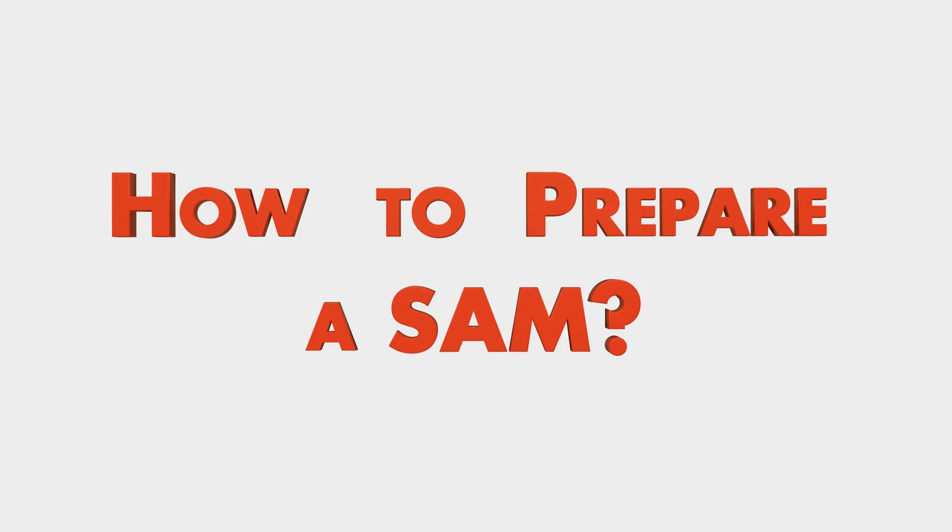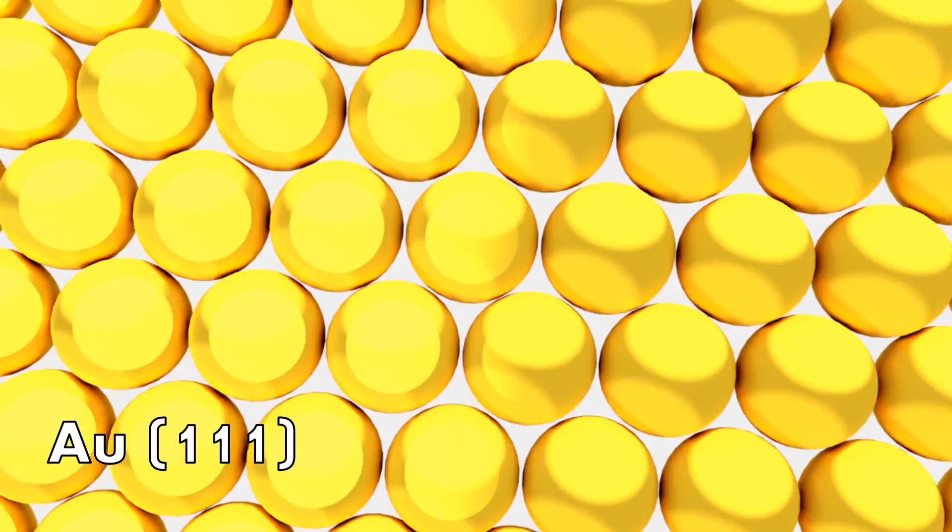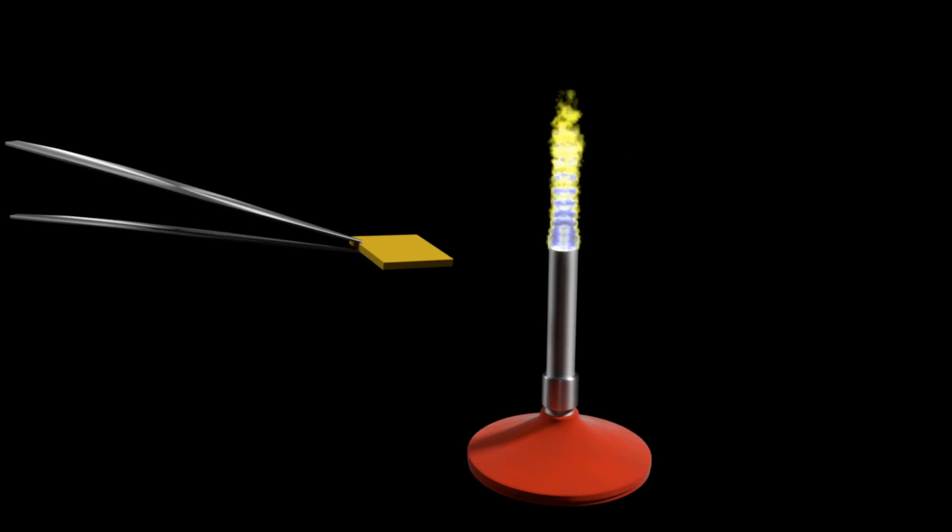There are several ways to prepare a SAM, but let me show you how we do it in our group. We start by cutting a small piece of gold. The gold has a thickness of 300 nanometers, and it's supported on mica.